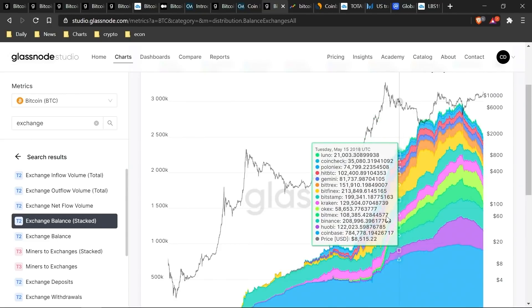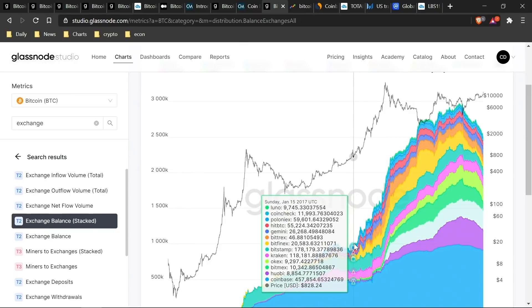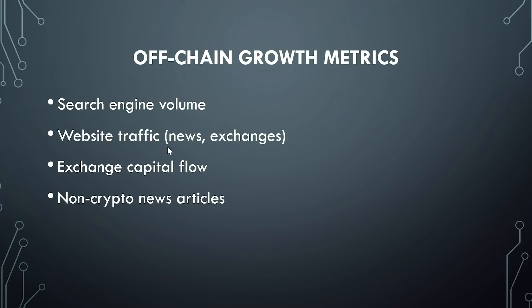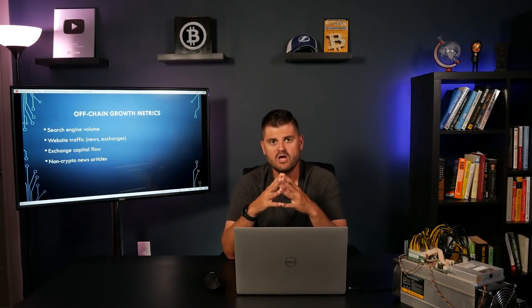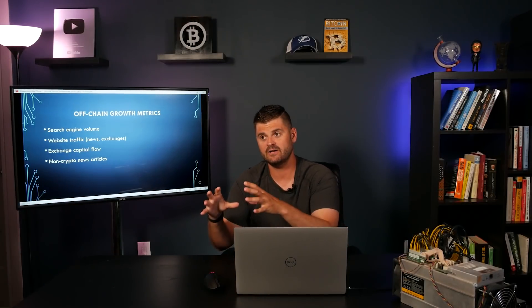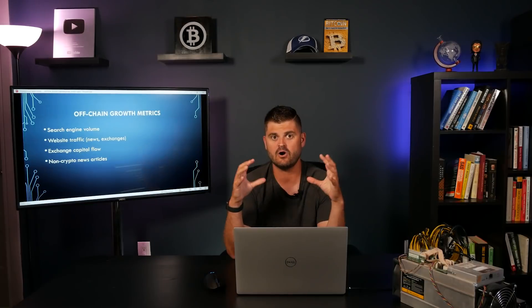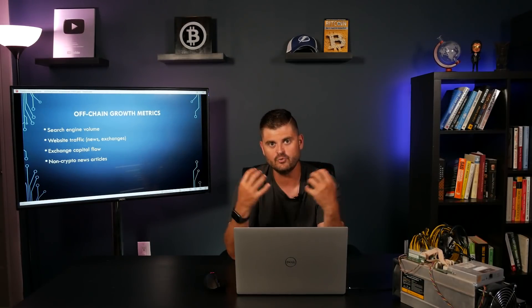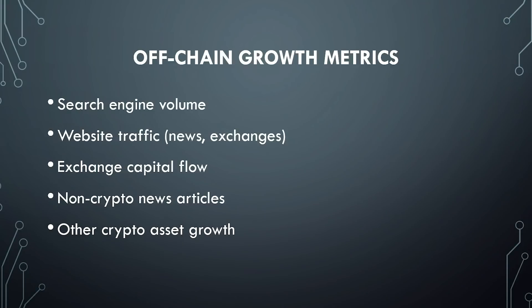Just like we can look at website traffic for crypto-related sites, another thing you can do is look for news articles on non-crypto news websites. When you start to see places like the Wall Street Journal and CNBC and other mainstream news companies starting to talk about Bitcoin, that can be a sign that non-crypto people are paying attention, which may draw in new eyeballs and ultimately new capital into the space.